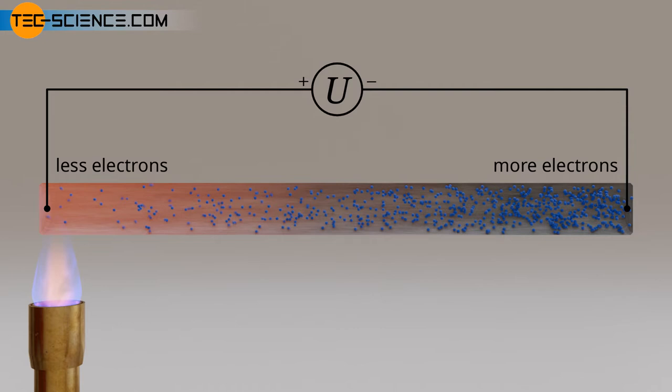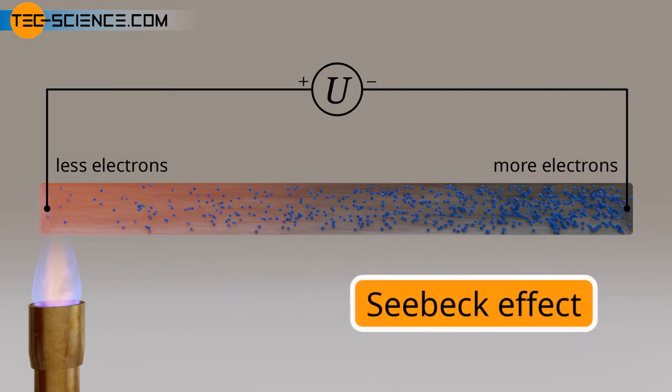This thermoelectric effect is also called the Seebeck effect, and the thermoelectric voltage is also referred to as Seebeck voltage. Per Kelvin temperature difference along an electrical conductor, the Seebeck effect is in the order of a few microvolts.